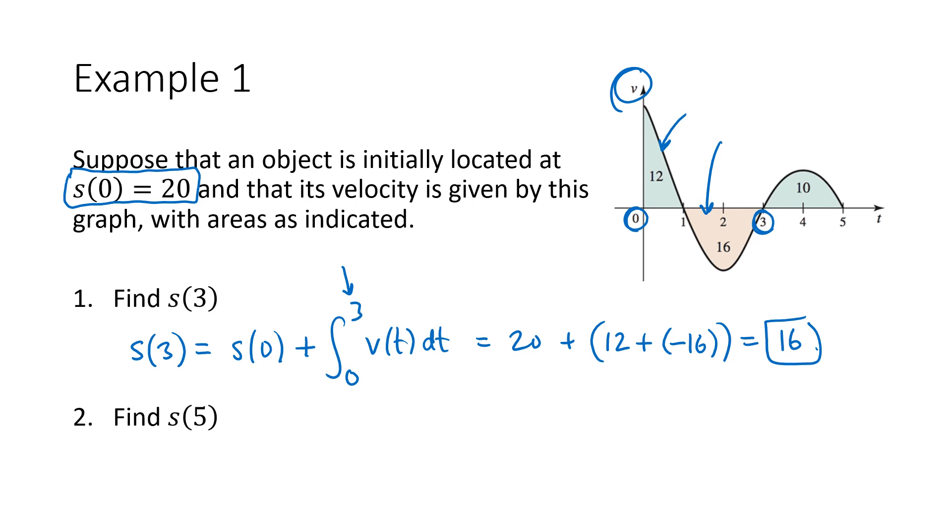And we can do something very similar to figure out the position at t equals 5. So s(5) is s(0) plus the integral from 0 to 5 of my velocity function. So again, that'll be 20. And if I integrate from 0 to 5, I have positive 12 units, negative 16 units, and then positive 10 units again, all the way up to my ending point, 5. So 12 plus negative 16 plus 10, and that's going to work out to be 26.